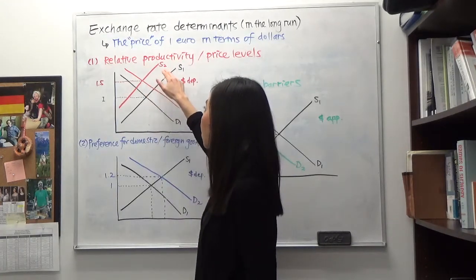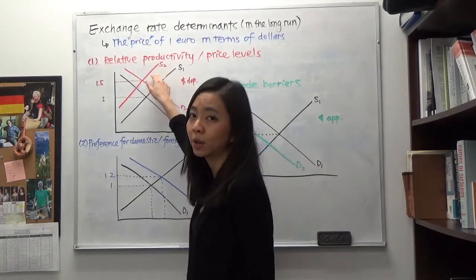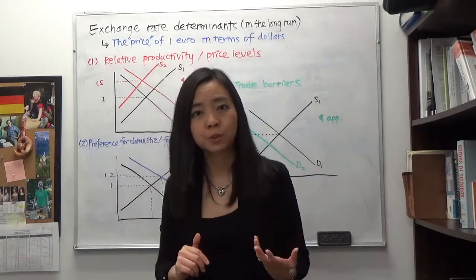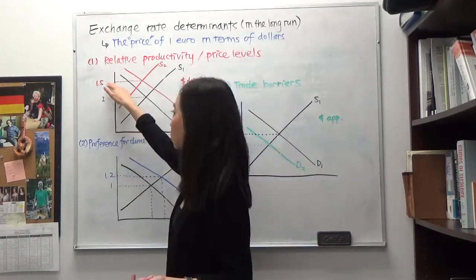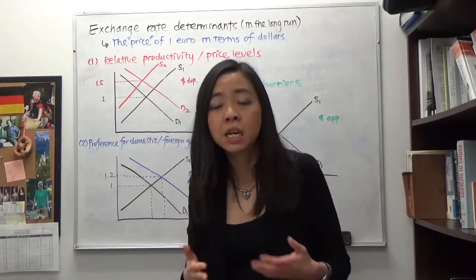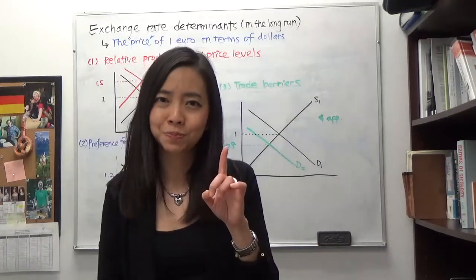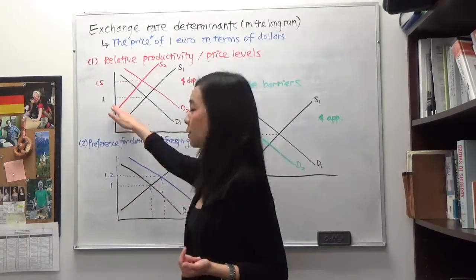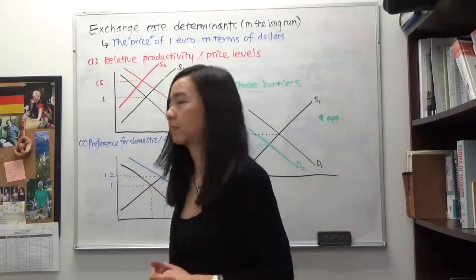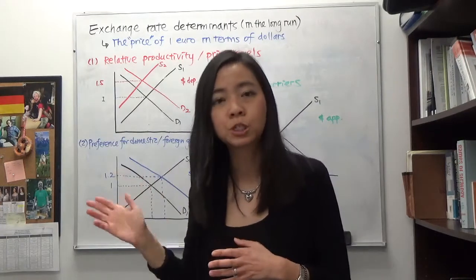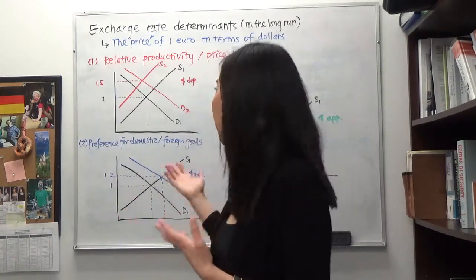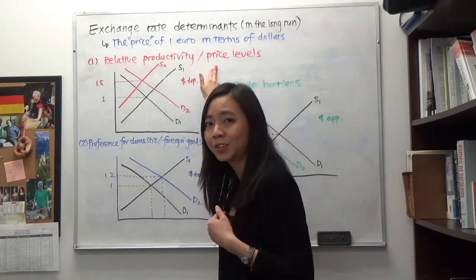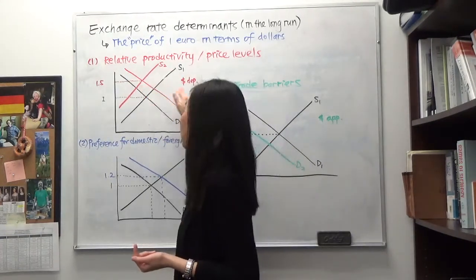So you can see their supply of euro is going to shift from S1 to S2. In equilibrium, you can see the price of a euro in terms of the dollar has increased from $1 to $1.50. Meaning now it costs more dollars to buy one euro. So the dollar has become less valuable, meaning the dollar has depreciated. So if the European countries become more productive than America, then their price level is also going to become lower. That is going to cause the dollar to depreciate.